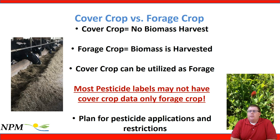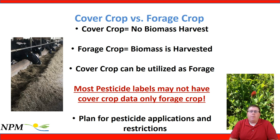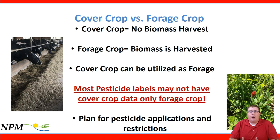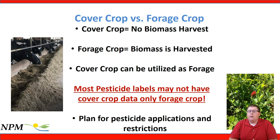The first thing to keep in mind is what is a cover crop versus a forage crop. A cover crop is when no biomass is harvested and is usually planted for soil conservation purposes. A forage crop is where we want to harvest that biomass through either grazing or mechanical harvest. Cover crops can certainly be utilized as forage, but there are a few things we should think about before we plant them to ensure success. Most pesticide labels may or may not have cover crop data, but they usually have forage crop data that we should reference for rotational restrictions, and we should plan our pesticide applications and cover cropping around these rotational restrictions if we intend to harvest these for feed.